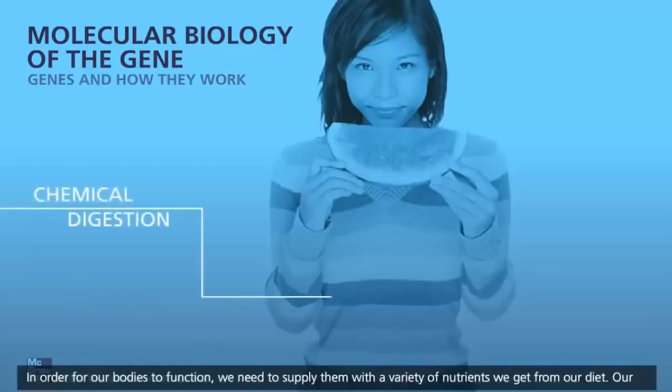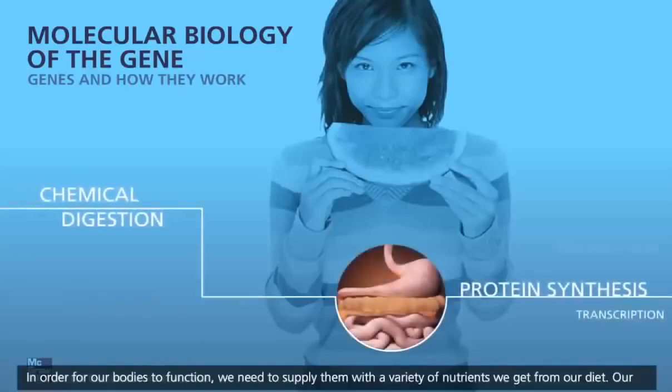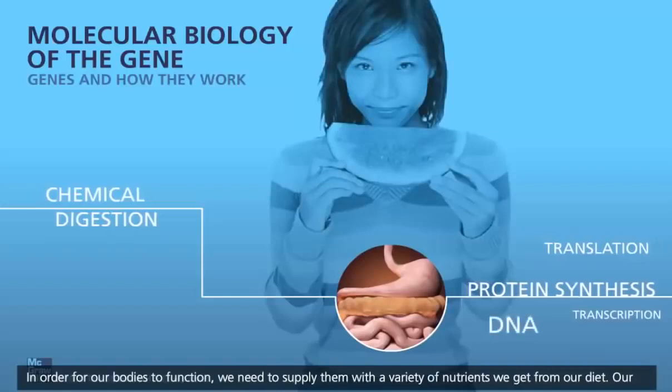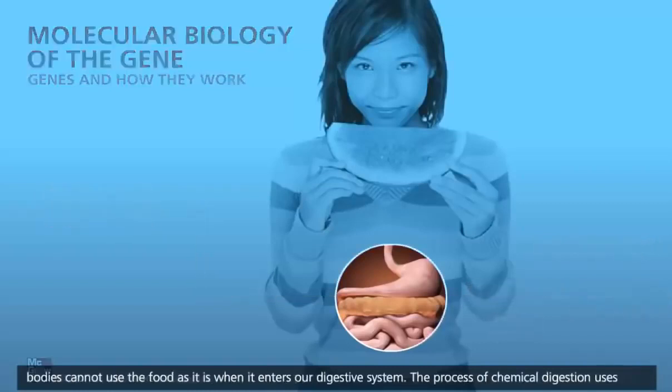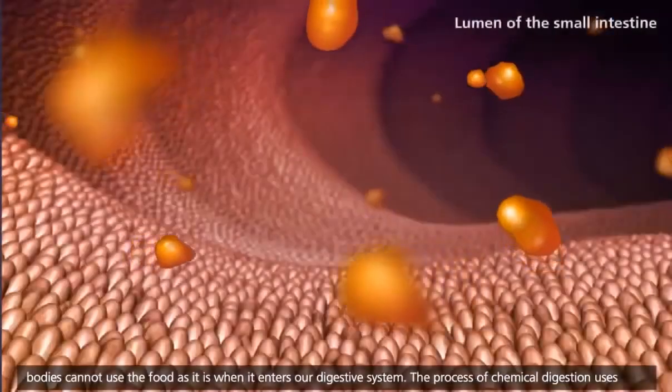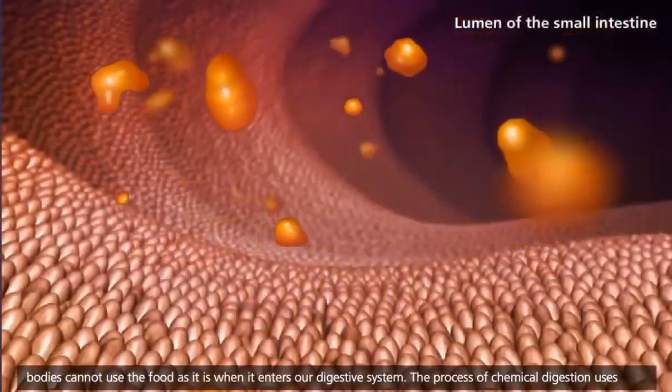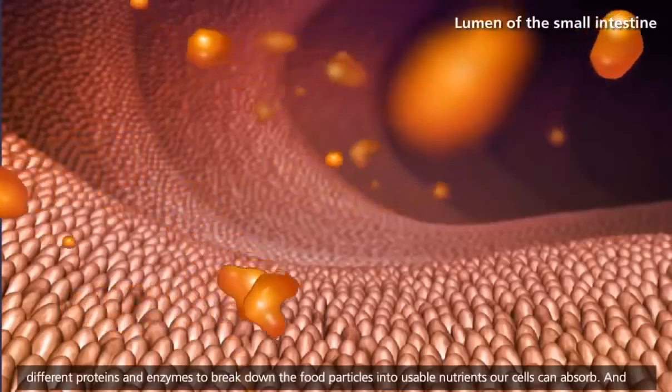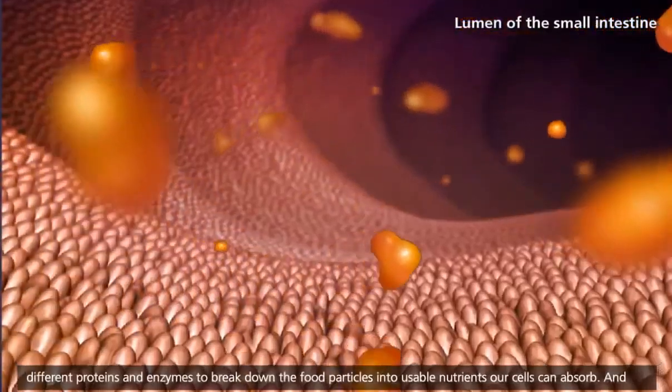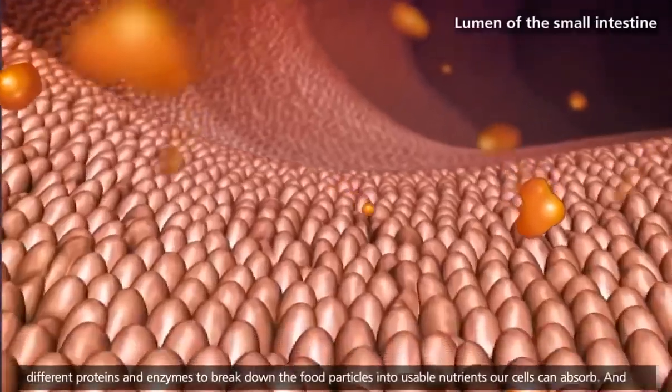In order for our bodies to function, we need to supply them with a variety of nutrients we get from our diet. Our bodies cannot use the food as it is when it enters our digestive system. The process of chemical digestion uses different proteins and enzymes to break down the food particles into usable nutrients our cells can absorb.